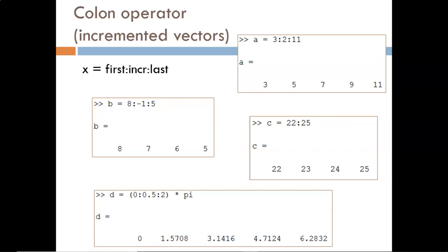I could have also done this by including pi next to the 0, the 0.5, and the 2, but it is more efficient to type as shown here.